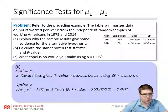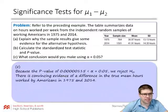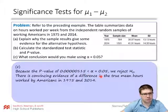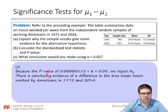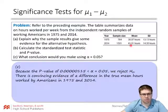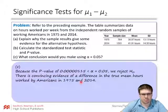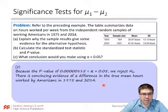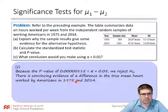Finally, our conclusion. Because that tiny p-value is much less than alpha 0.05, we reject the null hypothesis. There is convincing evidence — that difference of about 3 hours was really significant, especially since we had such a large sample size, so we were able to detect that as a significant difference. There is convincing evidence of a difference in the true mean hours worked by Americans in 1975 and in 2014.